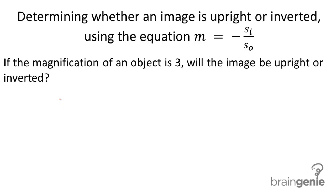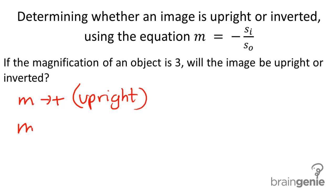So if we have a value of m that is positive, that means that the image is upright. If m is, on the other hand, negative, that means that the object is inverted.